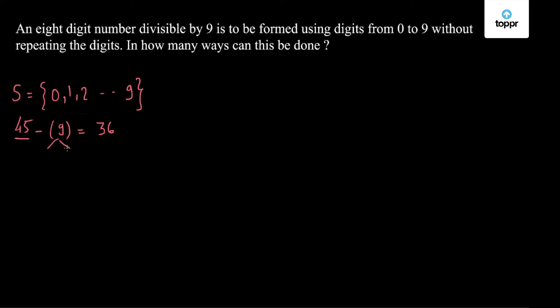So we have to find pairs of numbers such that their sum is 9, so that if we exclude these pairs one at a time, the rest of the digits together will add up to a number which is divisible by 9. So these digits can be used to form a number of our desired condition.